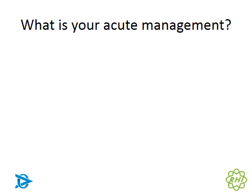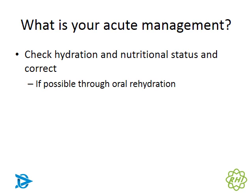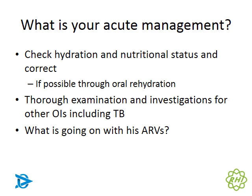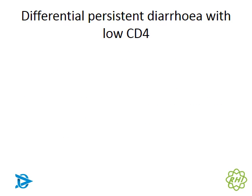For acute management, ensure hydration and nutritional status are corrected, preferably using oral rehydration. Begin investigations for other opportunistic infections and do a thorough examination. Also check on the patient's ARV status — has he been started on ARVs, when, is he stopping and starting, or has he been on ARVs in the past? Then move on to approaching the patient with persistent diarrhea and a low CD4 count.